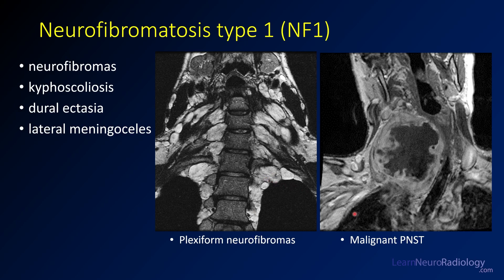Sometimes these neurofibromas can degenerate into malignant nerve sheath tumors. Here you see an enhancing mass with a centrally necrotic region — it's a very large lesion. The key features you're looking for if someone has degenerated: you're looking for one that's increasing in size rapidly, looking for central necrosis, and looking for evidence that the patient has pain. These are features of malignant degeneration.